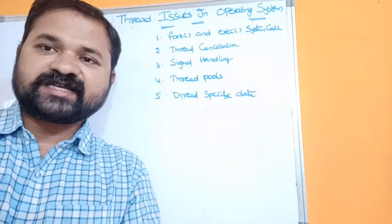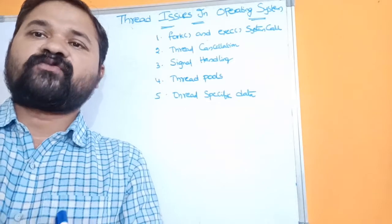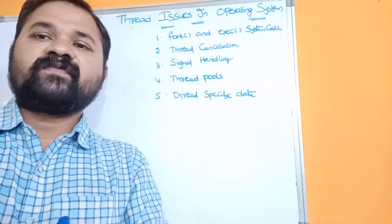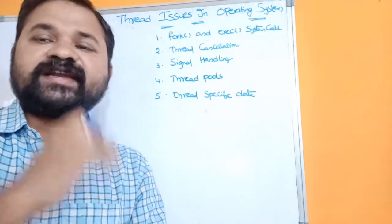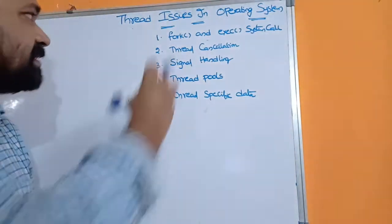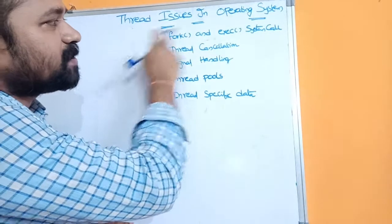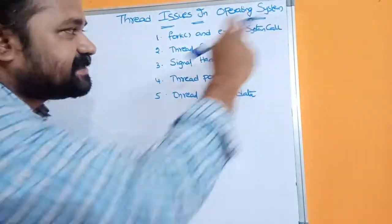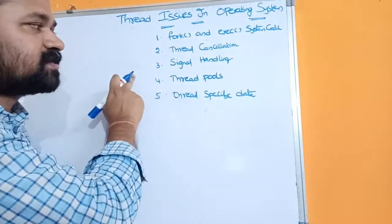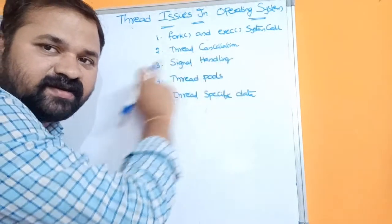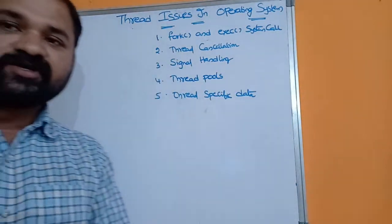In this video we are going to discuss thread issues in operating systems. While implementing multi-threading we have to consider certain threading issues. The issues we need to consider are: first, fork system call and exec system call; second, thread cancellation; third, signal handling; fourth, thread pools; and fifth, thread-specific data.